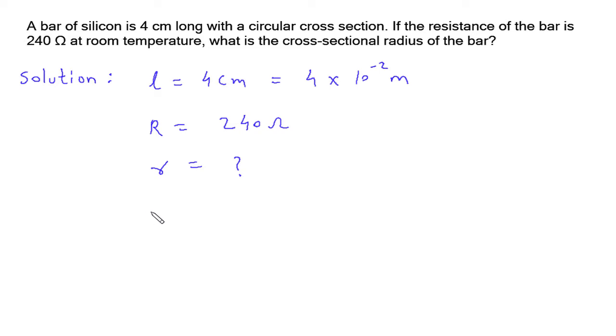The formula of resistance is R equals rho L by A, where R is the resistance, rho is the resistivity in Ohm meter, L is the length in meter, and A is the cross sectional area in meter square.